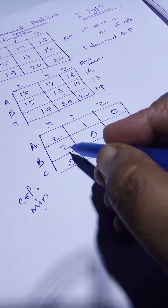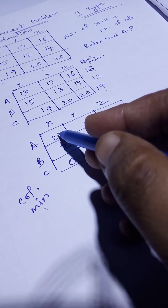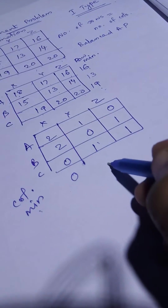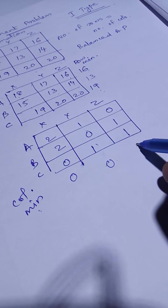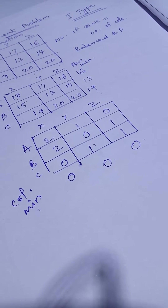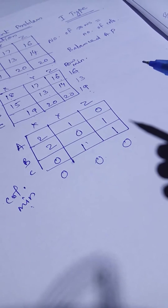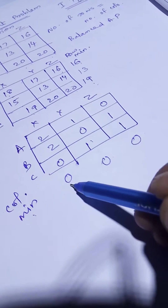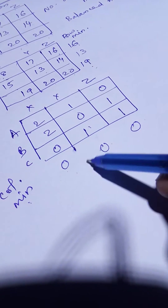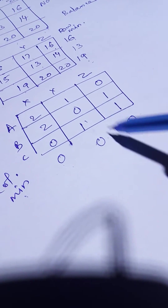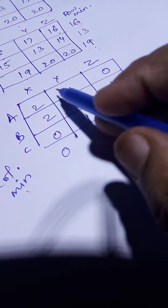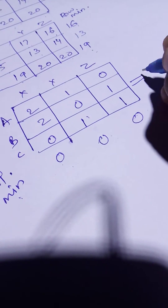Find the column minimum. For the first column: 2, 2, 0 — minimum is 0. Second column: 1, 0, 1 — minimum is 0. Third column: 0, 1, 1 — minimum is 0. Since all column minimums are 0, subtracting them makes no difference and you get the same matrix.